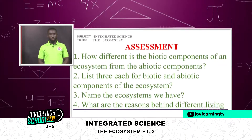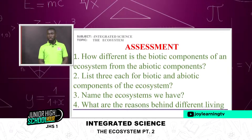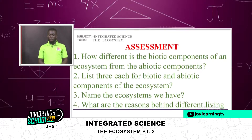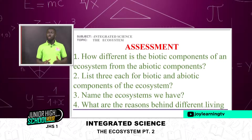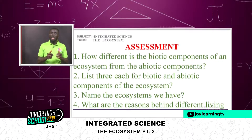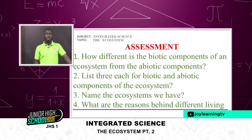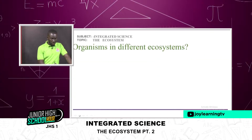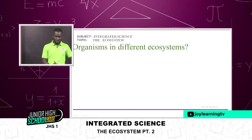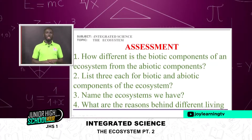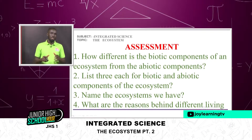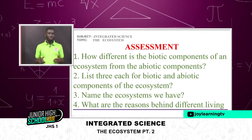Now these are my questions for you. Number one: how different are the biotic components of an ecosystem from the abiotic components? Number two: list three each for biotic and abiotic components of the ecosystem. Number three: name the main ecosystems we have — how many are there? Number four: what are the reasons behind different living organisms living in different ecosystems? Why don't we have the same organisms in different ecosystems?